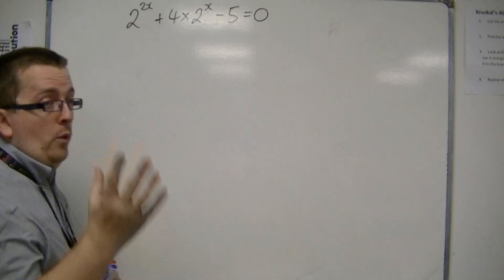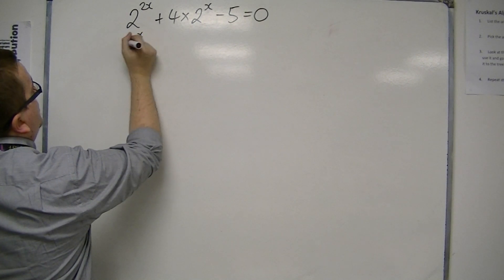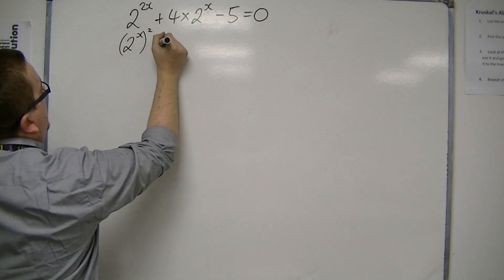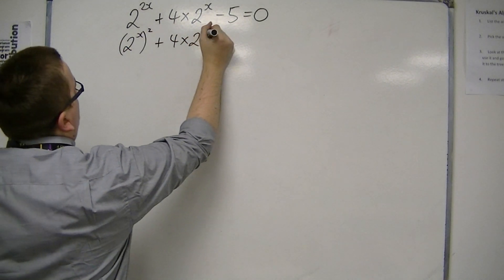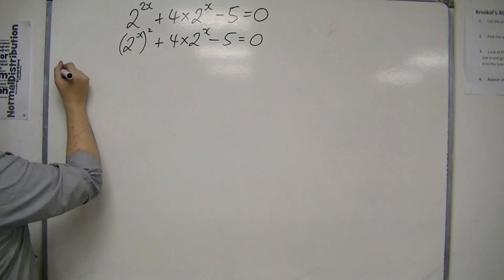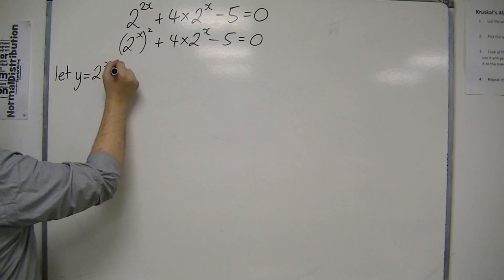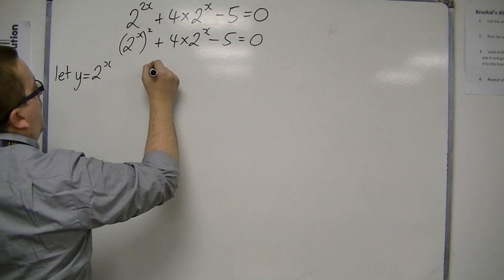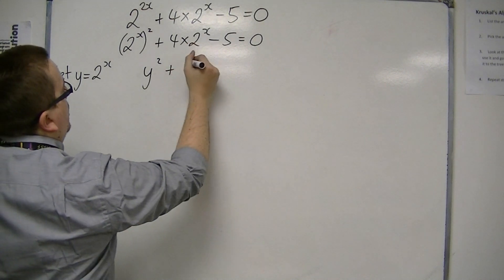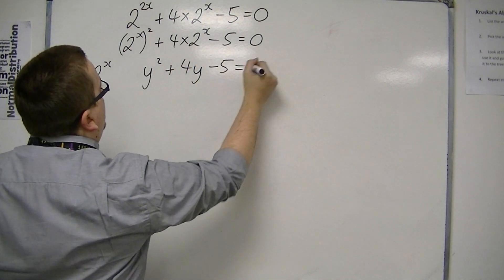So the first step, as it was in the previous video, I could write 2 to the 2x as 2 to the x squared. And from there, we can then make a substitution. So in this case, let y be 2 to the x. So I'm going to get y squared plus 4 lots of 2 to the x, which is 4y, take away 5, is 0.